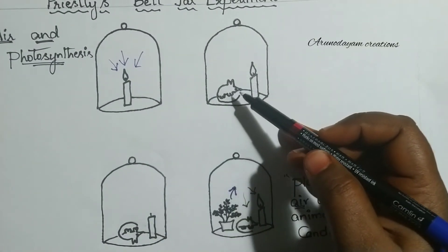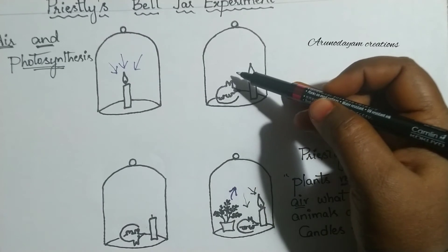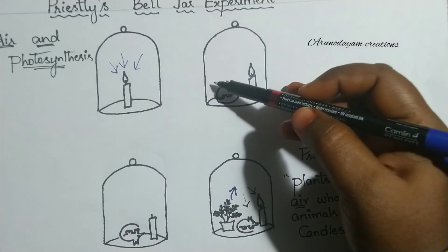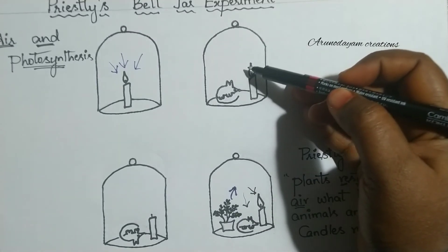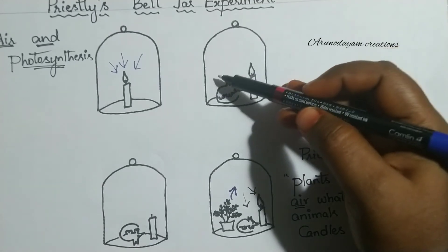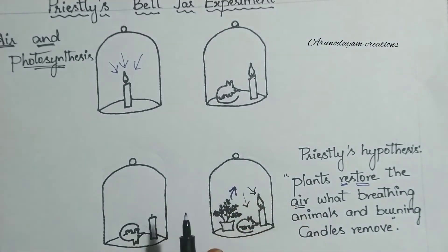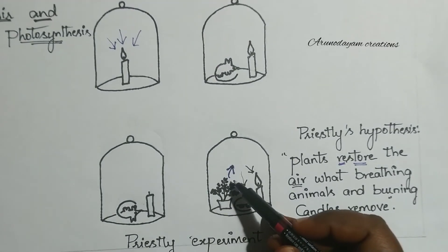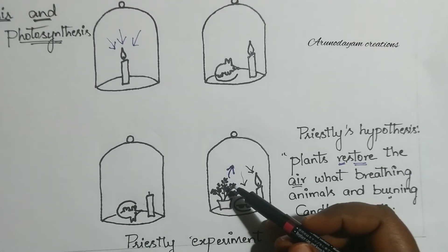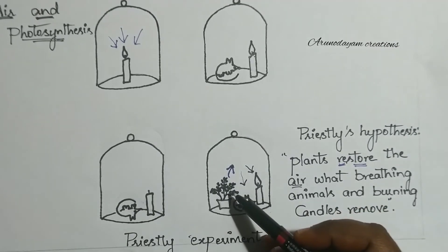In the second series, he added a mouse. Both the candle and the mouse were taking oxygen from the air present inside the glass jar. When he introduced a mint plant, it started releasing oxygen. The mint plant is performing photosynthesis, and oxygen is released as a result.